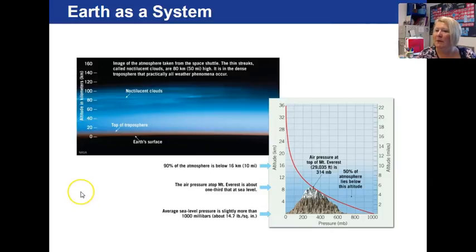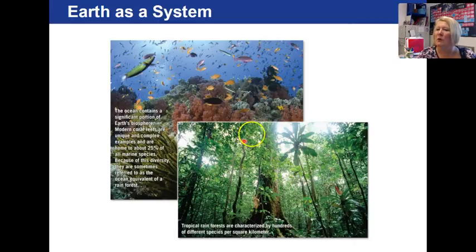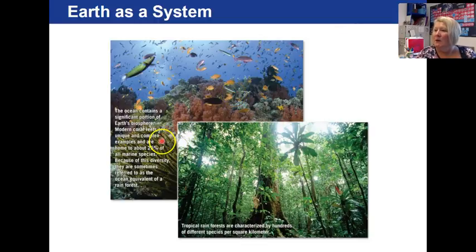This is showing the atmosphere and the different layers of the atmosphere. Here is our biosphere. Looking at a tropical rainforest — a very complex ecosystem, equivalent to a coral reef except not underwater. Coral reefs are a very complex ecosystem as well. They're unique, complex, and home to about 25% of all marine organisms. So they are the ocean equivalent of a rainforest, as they describe it.